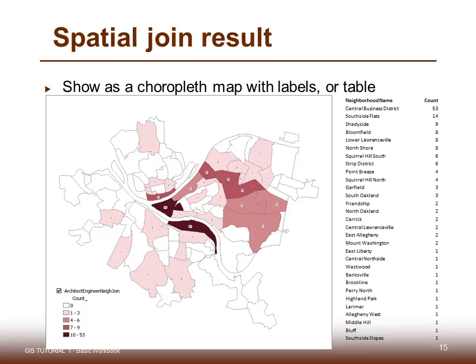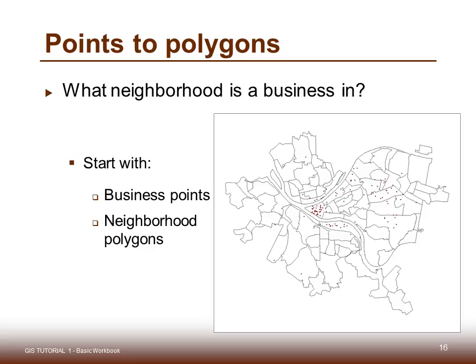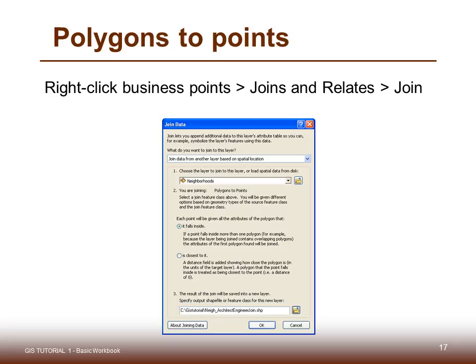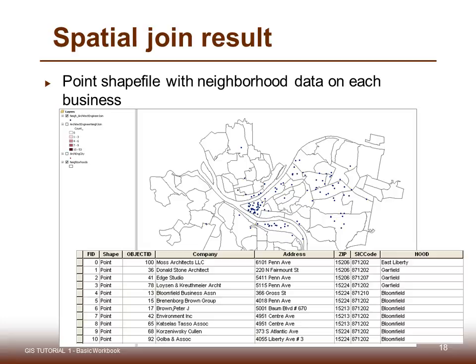Another option is points to polygons to answer: what neighborhood is a business in? Start with business points and neighborhood polygons. This time, right-click business points, select Joins and Relates, and Join. Choose the layer to join — in this case, neighborhoods — and select that each point will be given all the attributes of the polygon that it falls inside. Be sure you're aware of where you're saving the output. The result shows the point shapefile with neighborhood data attached to each of the businesses.